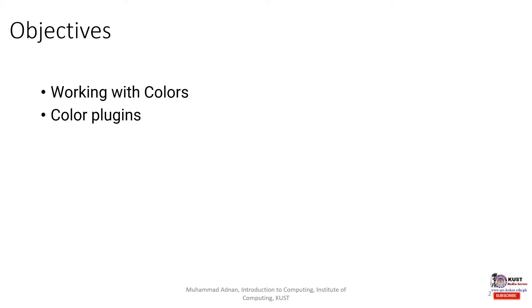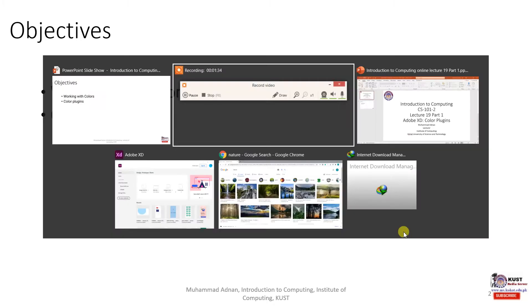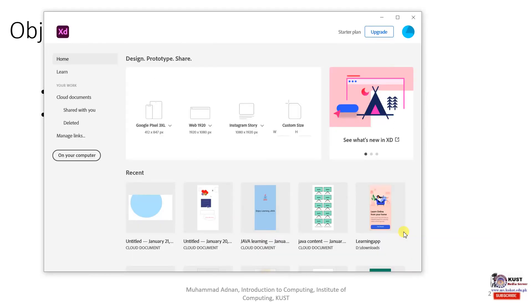So today we have two objectives: we are going to see how to work with colors, how to use different colors, how to import colors, how to use the color picker, how to steal colors from the internet or from anywhere, and then we are going to see what color plugins are and how to download and install them in Adobe XD. I'm going to go to the Adobe XD window and create a Web 1920 artboard.